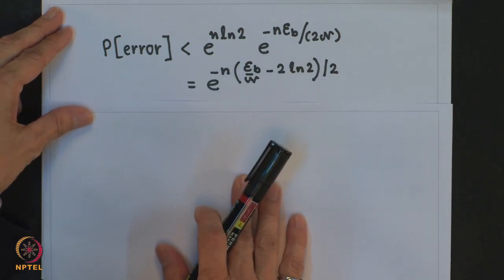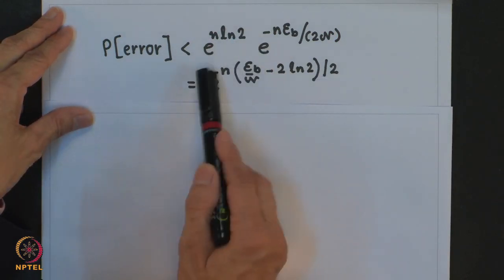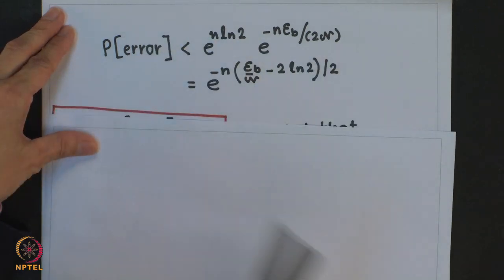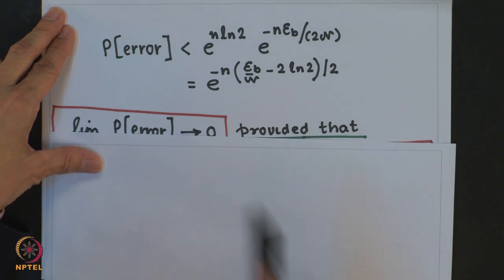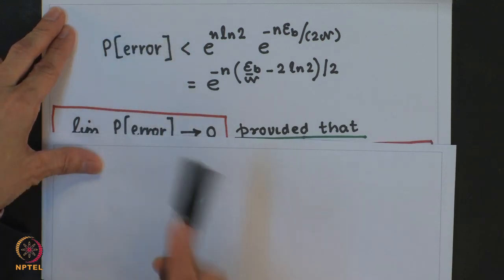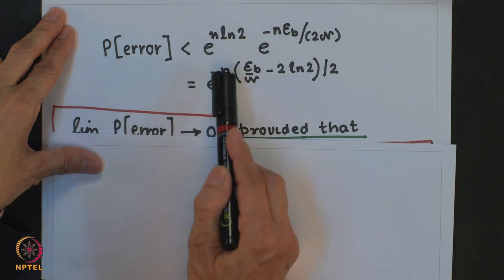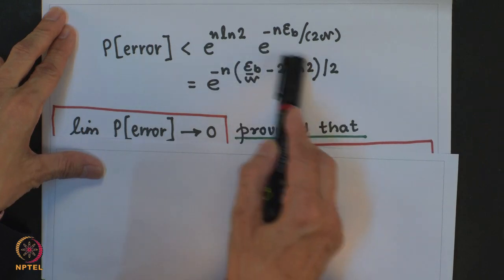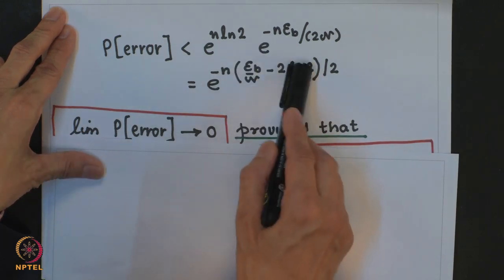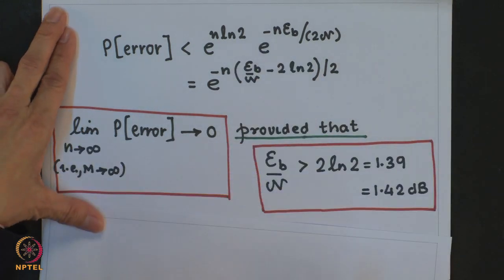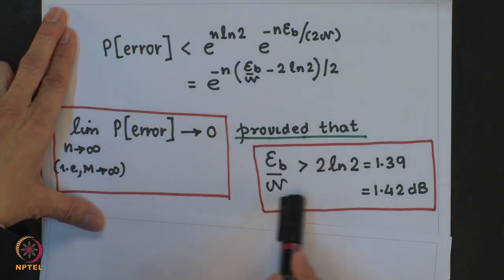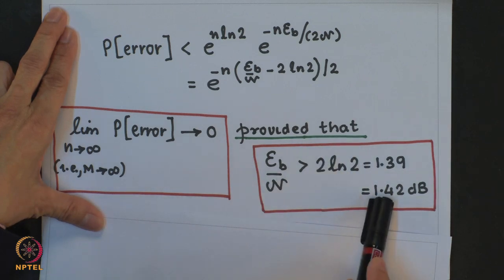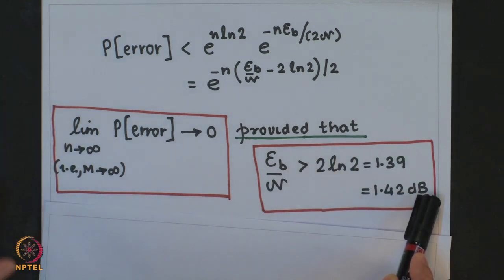Rewriting the bound, we see that the probability of error tends to 0 as N tends to infinity — meaning M also tends to infinity — provided the exponent is negative. This requires E_b/N₀ > ln 2 ≈ −1.42 dB. So the upper bound implies that as long as SNR per bit exceeds −1.42 dB, we can achieve arbitrarily low probability of error.